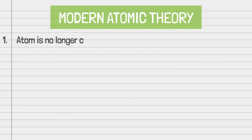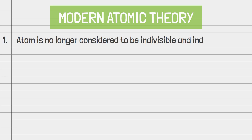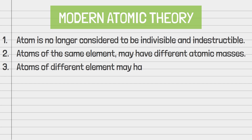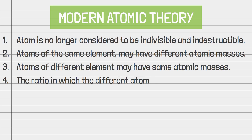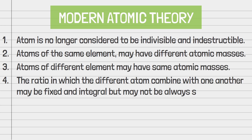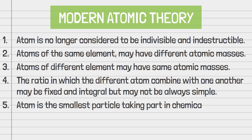Modern atomic theory. Point one: atoms are no longer considered to be indivisible and indestructible. Point two: atoms of the same element may have different atomic masses. Point three: atoms of different elements may have the same atomic mass. Point four: the ratio in which different atoms combine may be fixed and integral, but may not always be simple. Point five: the atom is still considered the smallest particle taking part in a chemical reaction, although we know that protons and photons also take part in chemical reactions.